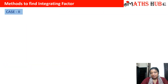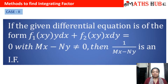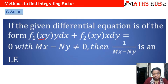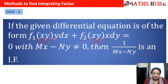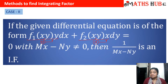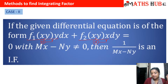Let us understand when we apply an integrating factor — when our differential equation is non-exact. The second case is whenever we have a differential equation of the kind f1(x, y) with y taken out from the dx term, and f2(x, y) with x taken out from the dy term. So if from M we can take out y common and from N we can take out x common, then the integrating factor is 1 upon (mx minus ny), provided the denominator is not zero.